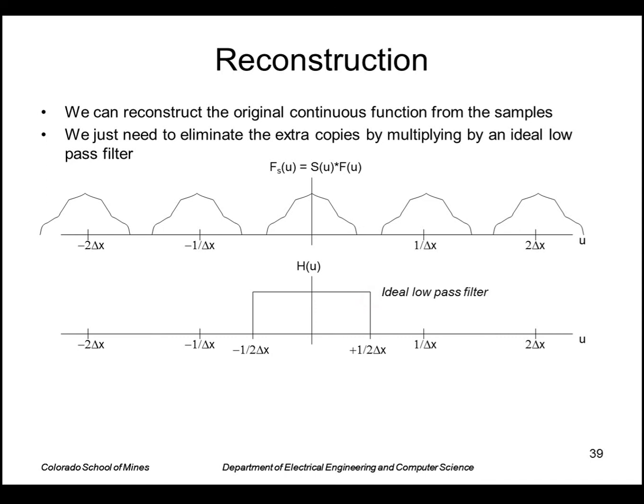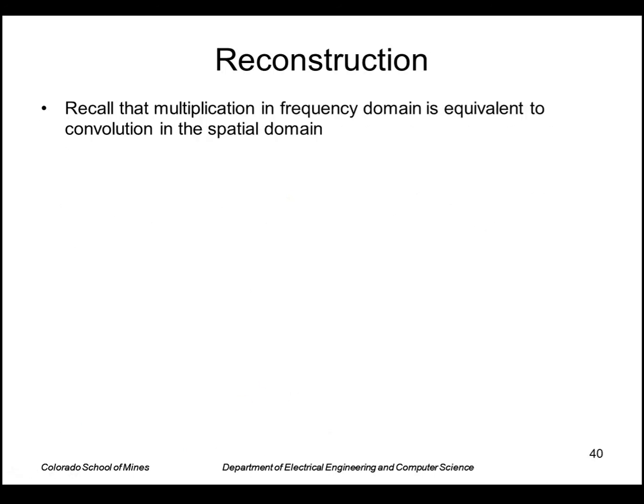And as we'll see a little bit later, this is an ideal low pass filter because it passes without change anything that has low frequencies and zeros out anything that has high frequencies. So multiplying this times this, we zero out all our copies and we just get back the original function, the original transform of the image. So how do you reconstruct the image from the samples?